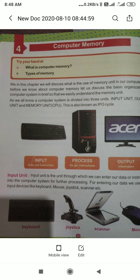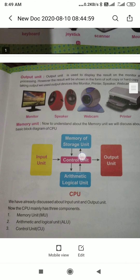A computer system is divided into three parts: input, process, and output. The input unit consists of input devices such as keyboard, joystick, scanner, and mouse, as you have seen in your books. The second is the output unit, which includes output devices such as monitor, speakers, webcams, and printers.